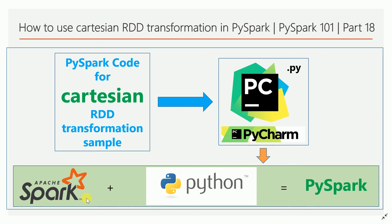What is a Cartesian product? If you are doing a Cartesian product on two datasets, for each element in the first dataset it will prepare the combination of that element with each element in the second dataset. That's how it forms the Cartesian product. We'll understand how it works in PySpark in terms of RDD transformation.